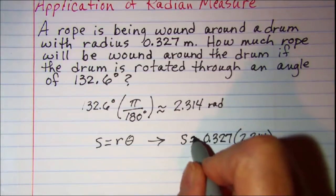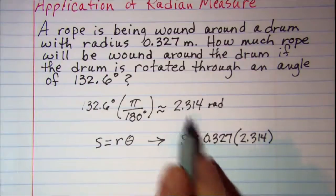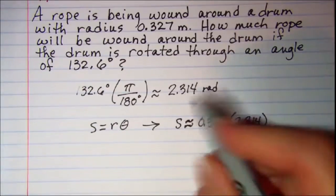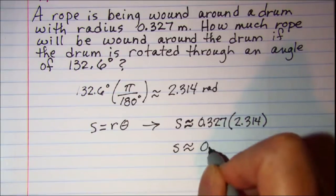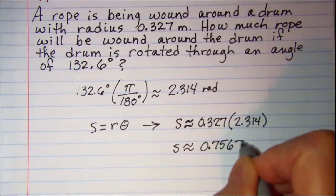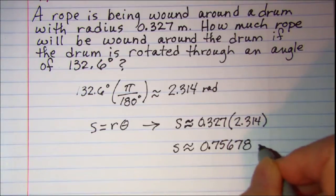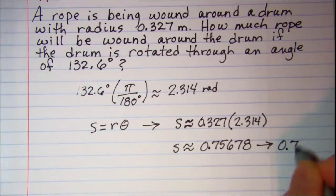This should be approximate because we rounded this theta measurement. This will give us s is approximately 0.75678, which we can round to 0.757 meters.